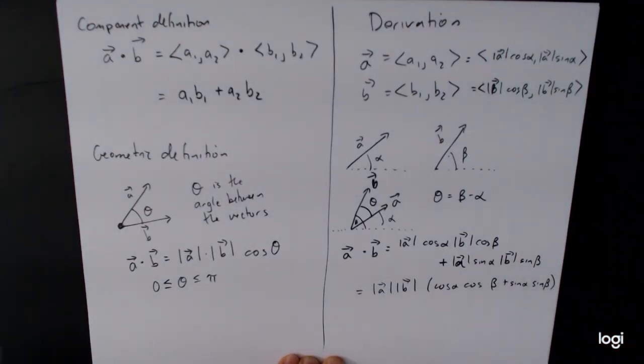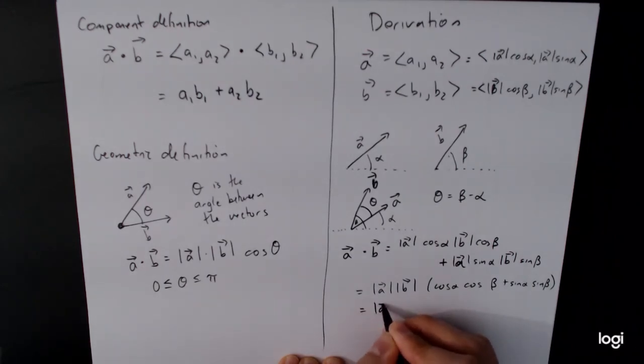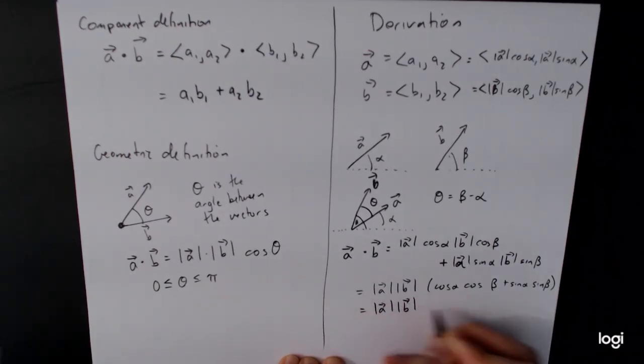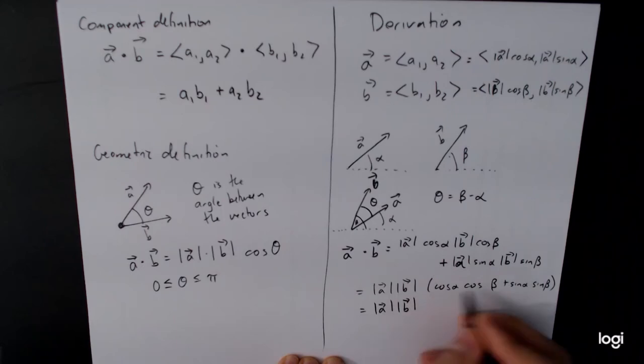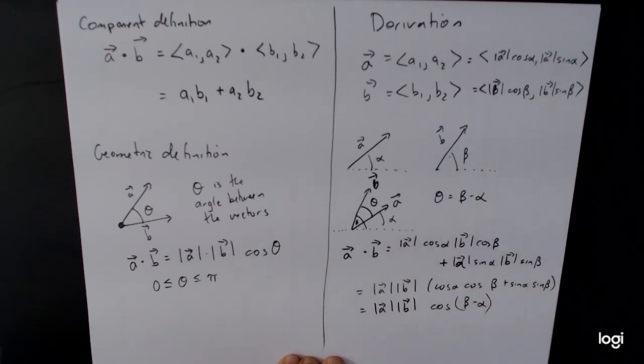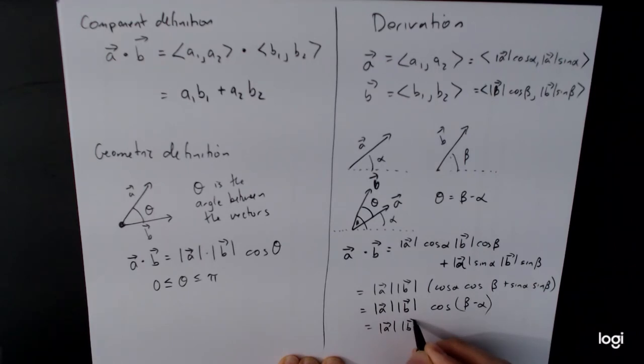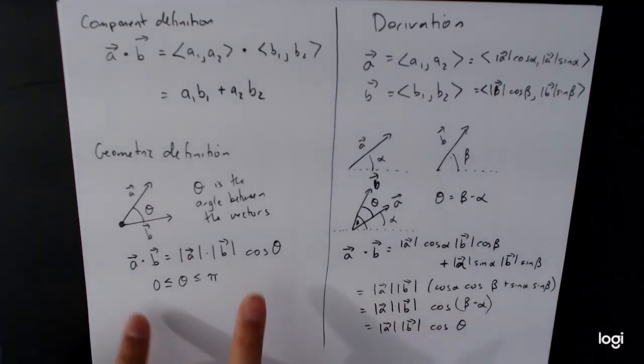Now you might recognize this combination of terms. This combination of terms is in fact the difference of angles formula for cosine. This is cosine of beta minus alpha. And beta minus alpha is theta, so this is length of a times length of b times the cosine of theta. And that's exactly what we have here. a dot b is equal to length of a times length of b times cosine theta.